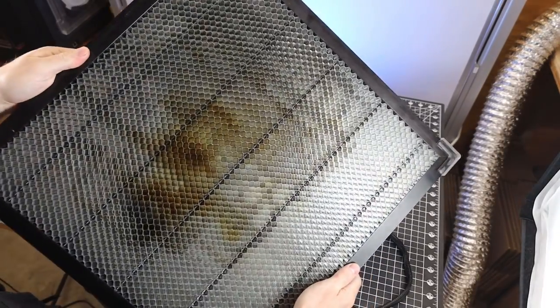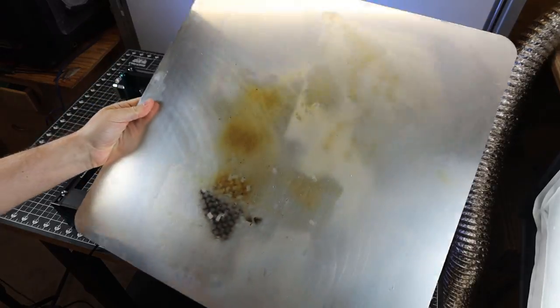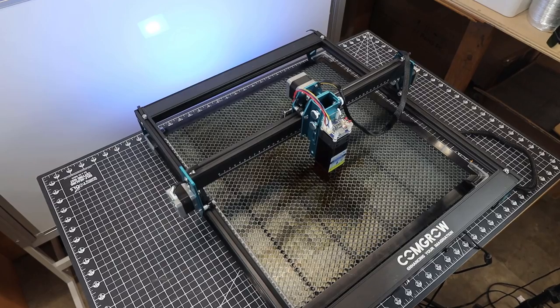And I highly suggest getting one of these hunting comb cutting surfaces. And it comes with this really large piece of sheet metal to go underneath it. And it fits perfectly under the machine.